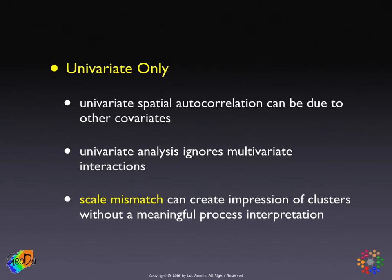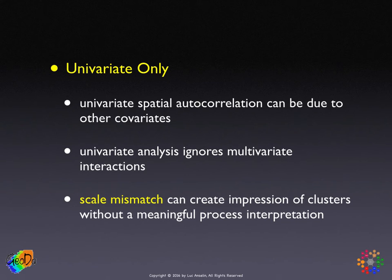By the same token, the detection of these clusters could suggest that you have a scale mismatch issue. When you have very large clusters with very high positive spatial autocorrelation, something is lacking. As we know from the initial discussion of spatial autocorrelation, high positive spatial autocorrelation implies a loss of information, insufficient variability, which doesn't allow you to explain very much. That's another side of the coin to keep in mind. Next, we'll cover how to deal with proportions or rates.